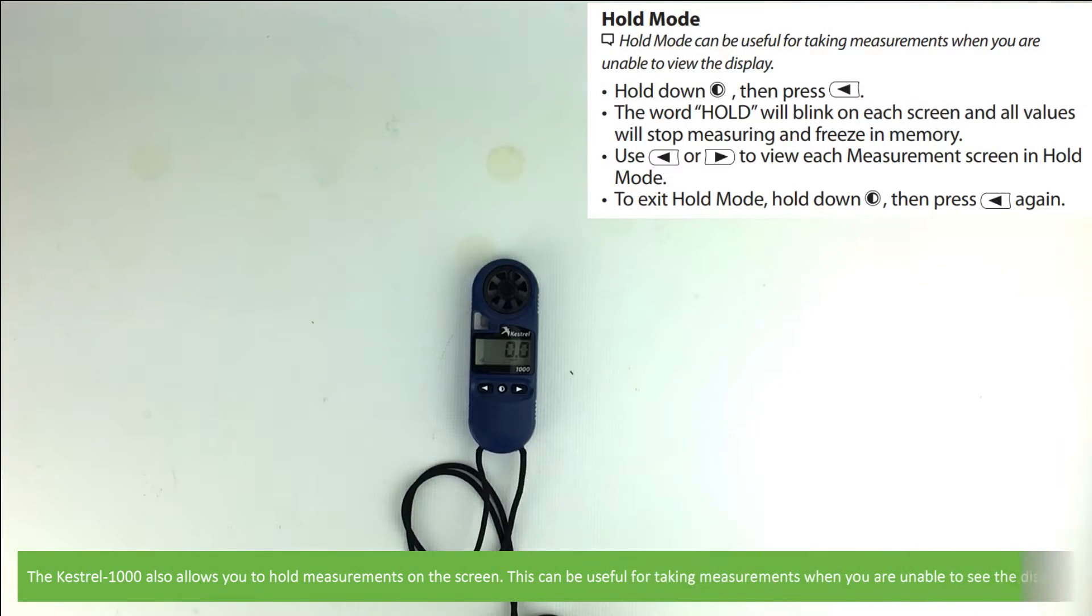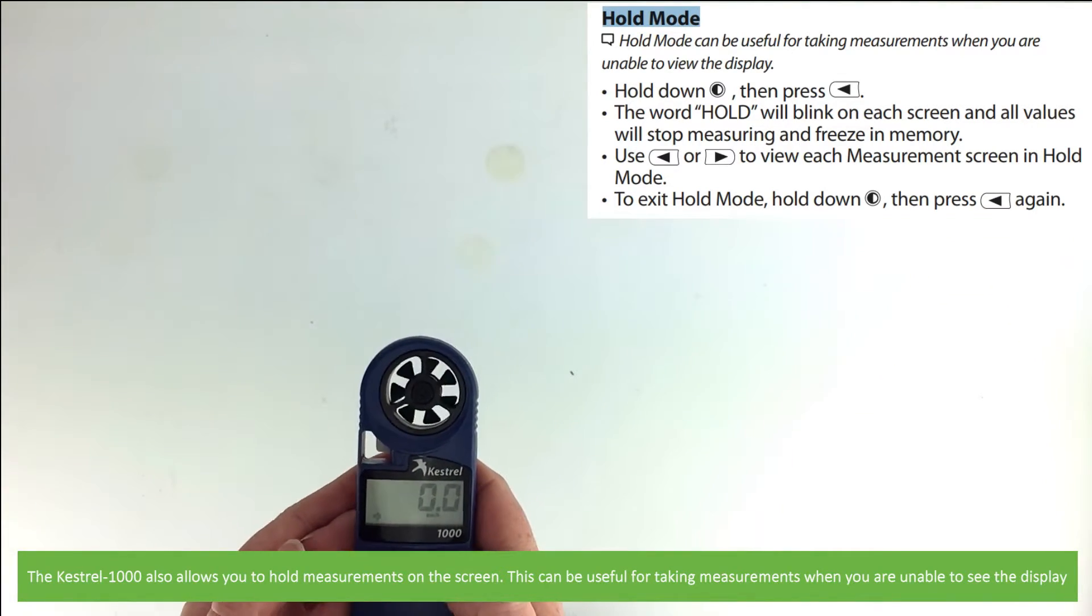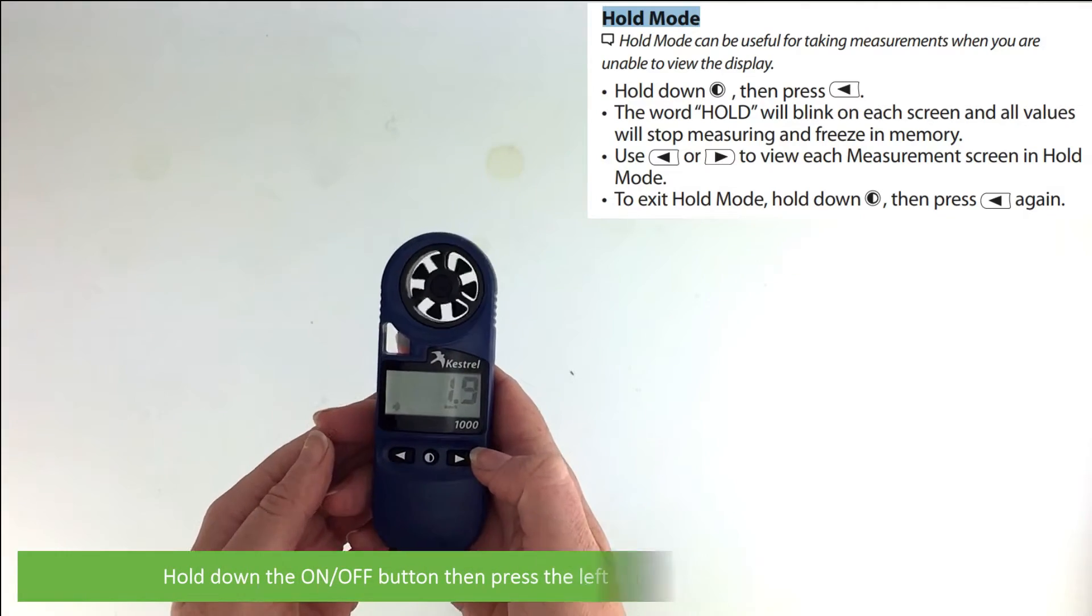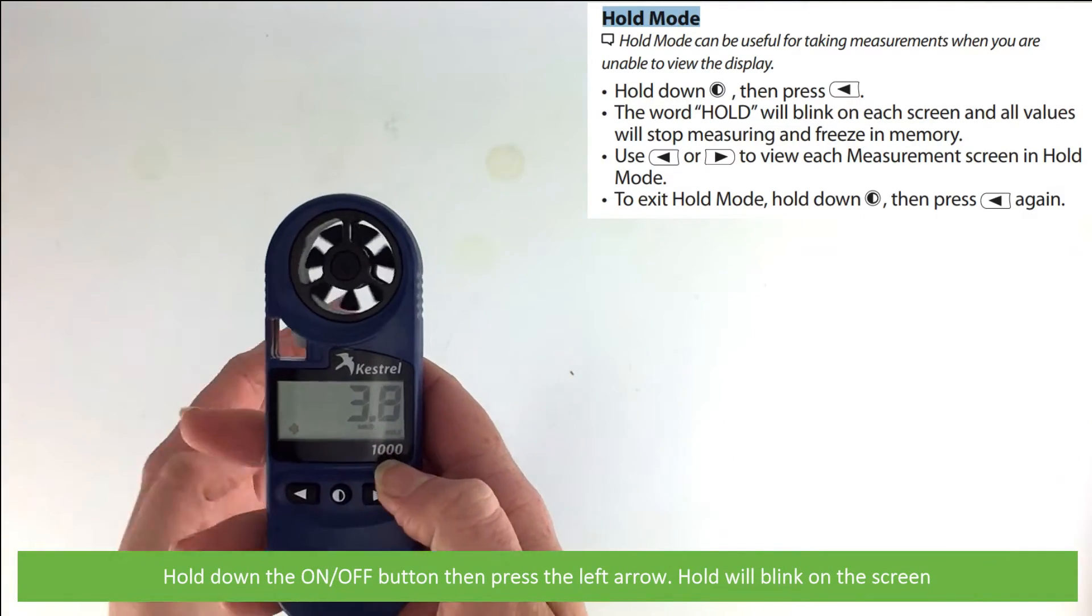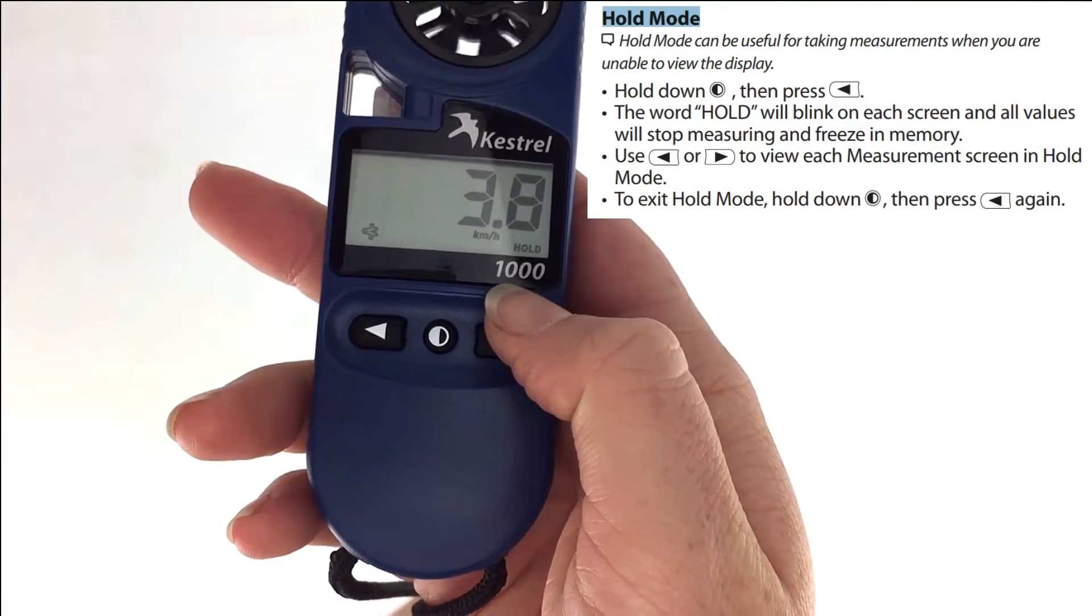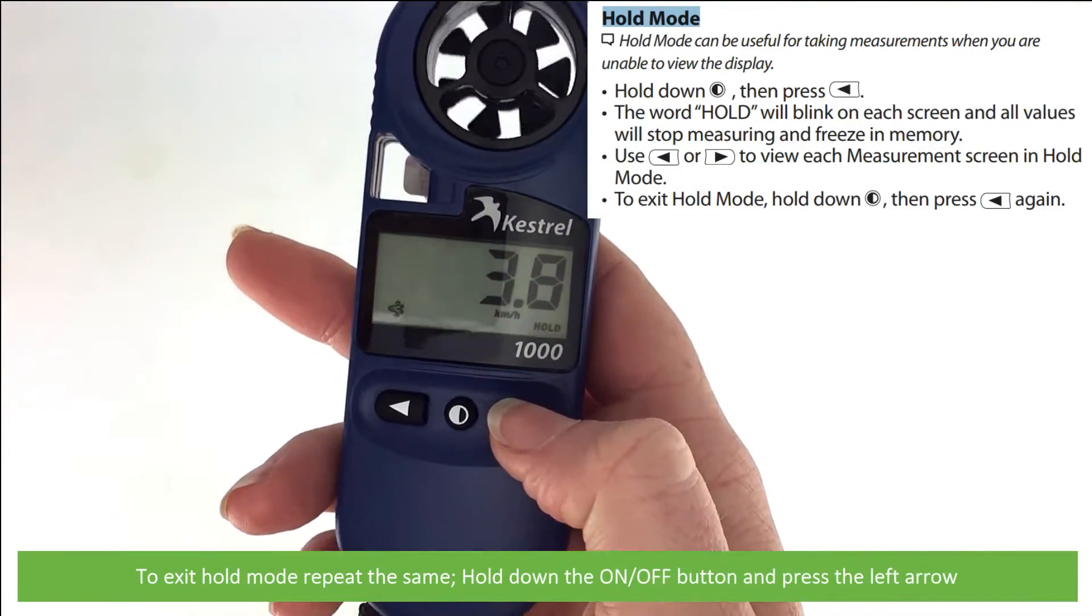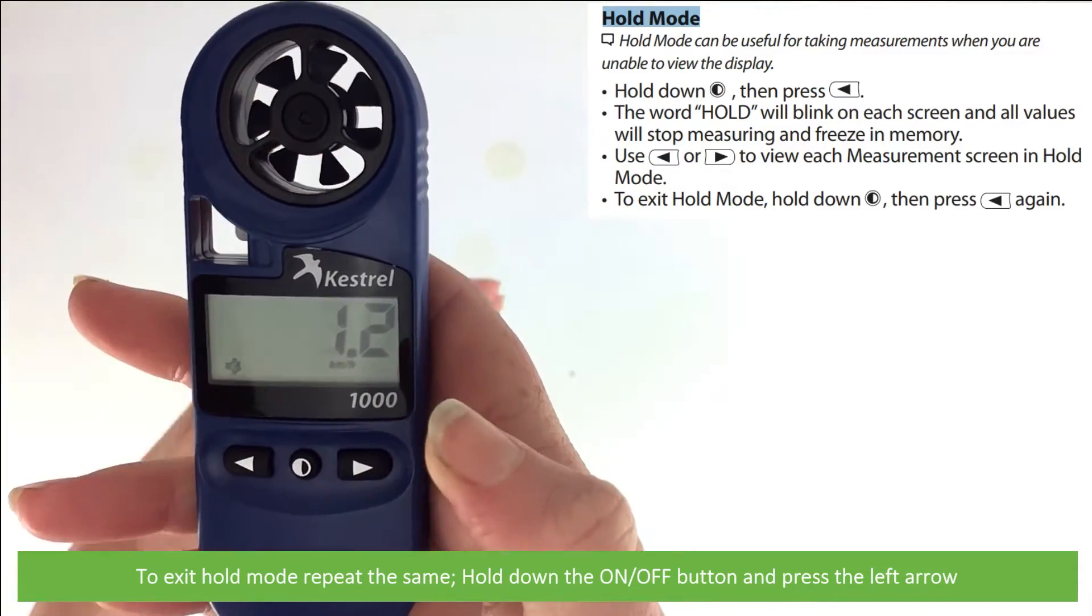The Kestrel 1000 also allows you to hold measurements on the screen. This can be useful for taking measurements when you're unable to see the display. Hold down the on-off button, then press the left arrow. 'Hold' will blink on the screen. To exit hold mode, hold down the on-off button, then press the left arrow again.